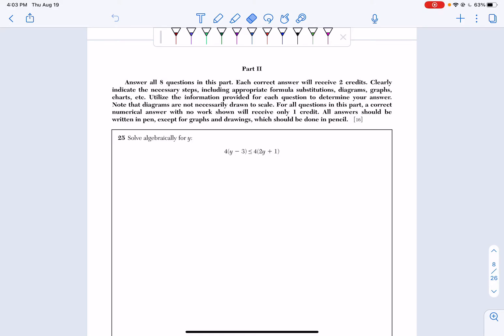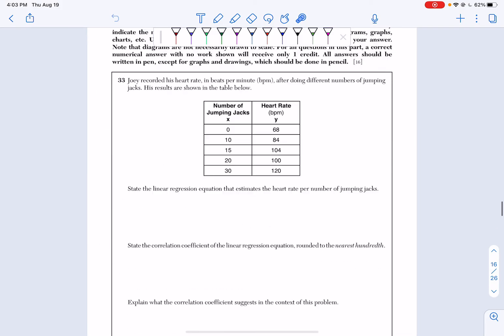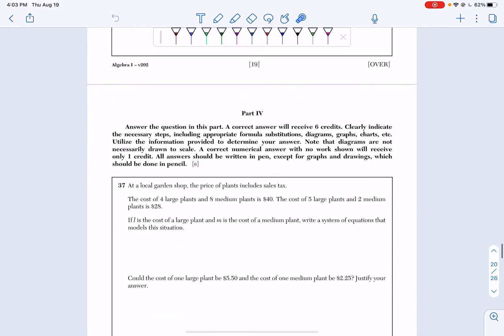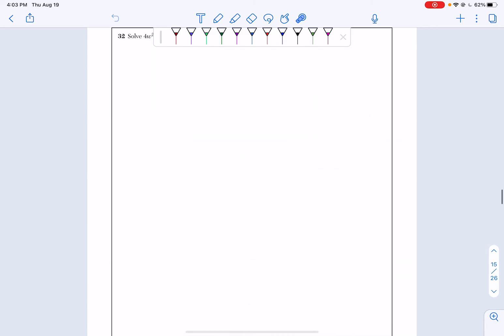Question number 25. This is the first part two question, so questions 25 through 37 are all short answer questions. They require you to show all work. You do get partial credit, so please make sure you answer them to the best of your ability.